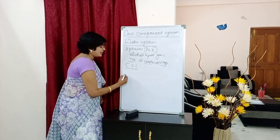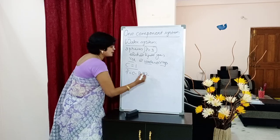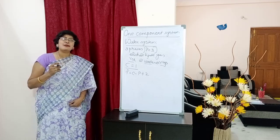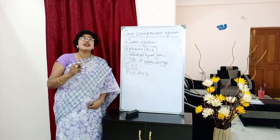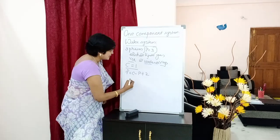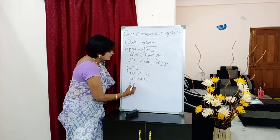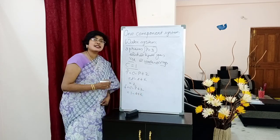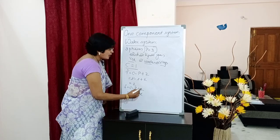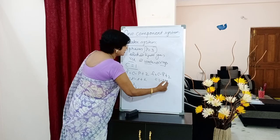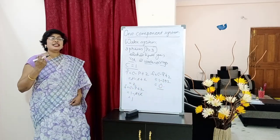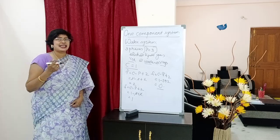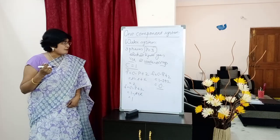From this information, we calculate degrees of freedom using the expression F = C - P + 2. When water exists in one phase: 1 - 1 + 2 = 2. When water exists in two phases: 1 - 2 + 2 = 1. When water exists in three phases: 1 - 3 + 2 = 0. So these are the three cases under degrees of freedom taking water system as the example, giving values of 2, 1, and 0.